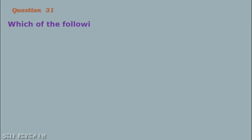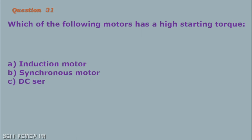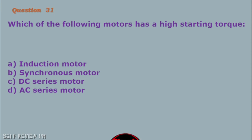Question number 31: Which of the following motors has a high starting torque? A. Induction motor B. Synchronous motor C. DC series motor D. AC series motor. The correct answer is letter C, DC series motor.